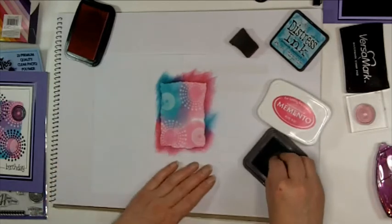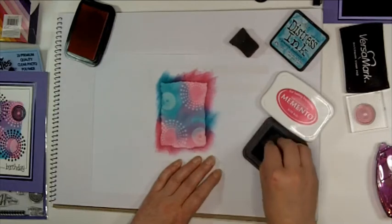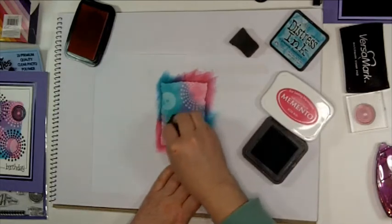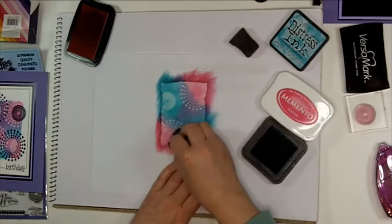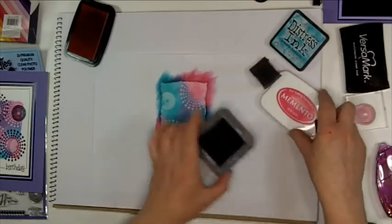And you can see what's happening. The dye-based ink won't stick to the Versamark ink pad. It acts as a resist. You get some lovely effects where you overlay different colors. We'll just go back in with a tiny bit more pink there.